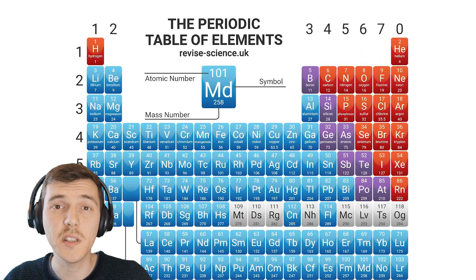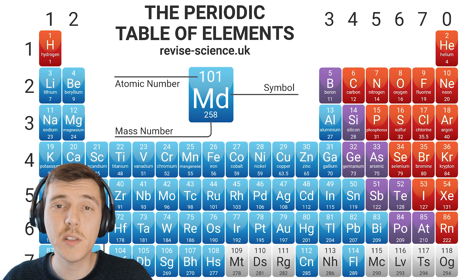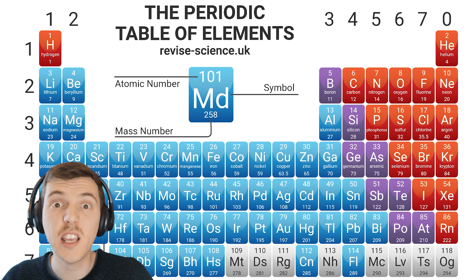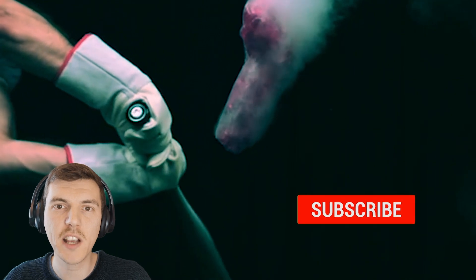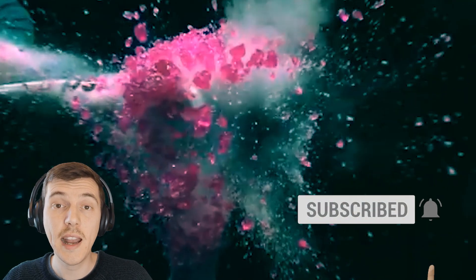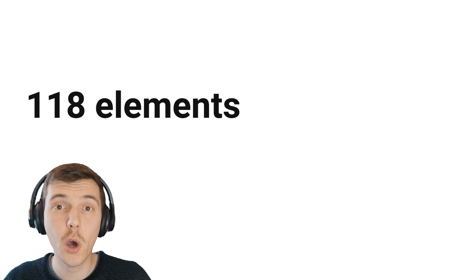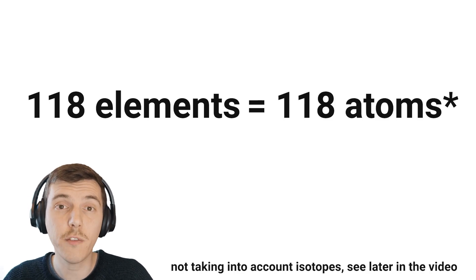Only 92 elements exist naturally. What that means is those 92 elements existed already in the universe before we even started to think about what an atom was. Scientists have been working over the years to smash together smaller atoms to try and make bigger elements, and now we know 118 different elements. Because each element is made up of its own type of atom, that means there are 118 different types of atom.